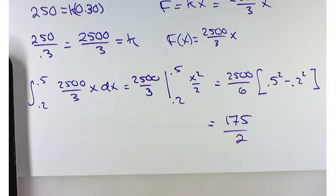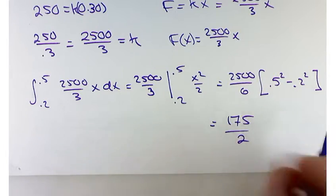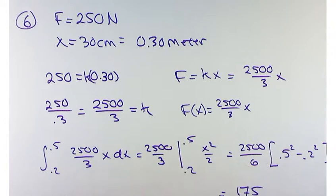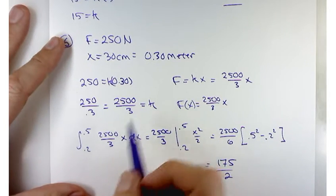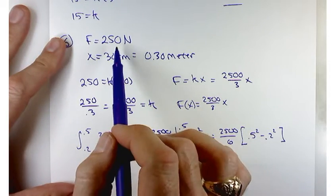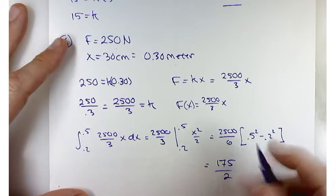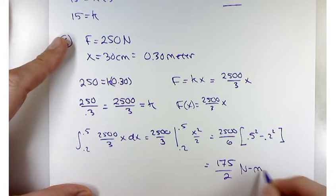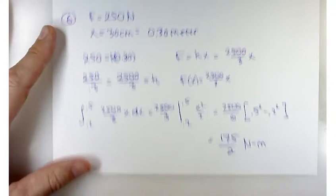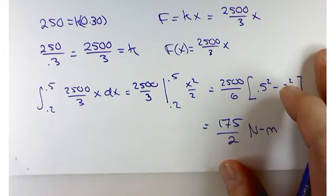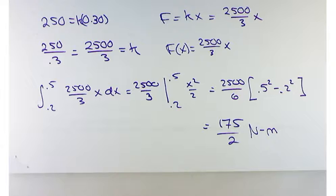What are the units going to be for a problem like this? You're going to have newton-meters. Work is force through distance, so force times distance gives you newton-meters, which is a common unit for work. Some other common ones you'll see are foot-pounds, and when the units get really big, ton-miles would be another one.